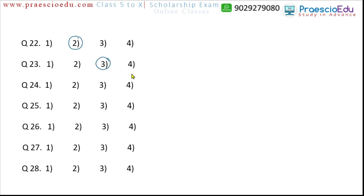Question 24: Gujarati, Punjabi, Tamil, and Malvani. Malvani is a dialect (boli-bhasha), while the others are state languages. So option four, Malvani, is the different one. Question 25: rice, sambar, curry, and kadi. Rice is solid, while sambar, curry, and kadi are liquid categories. So option one, rice, is the different one. Question 26: turban, hat, dhoti, and cap. Turban, hat, and cap are all worn on the head, but dhoti is not worn on the head. So option three, dhoti, is the different one.